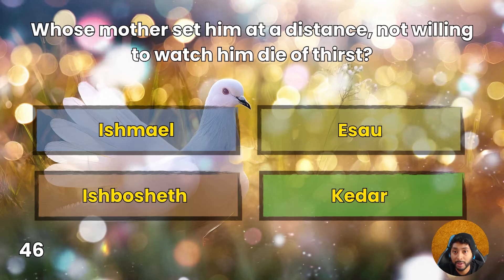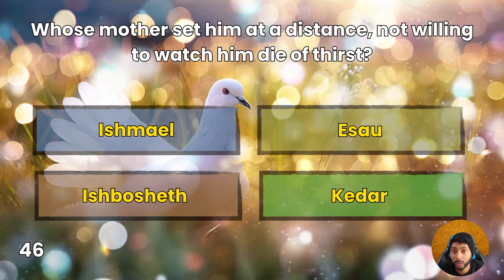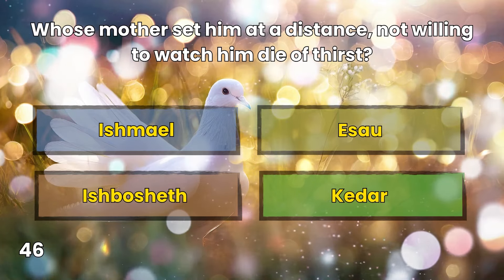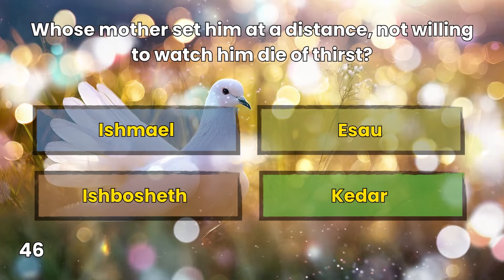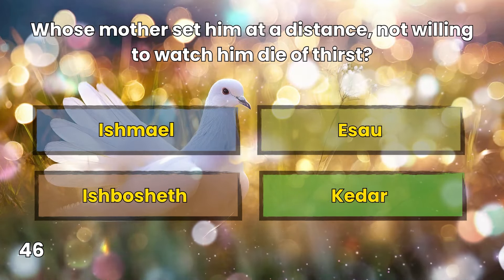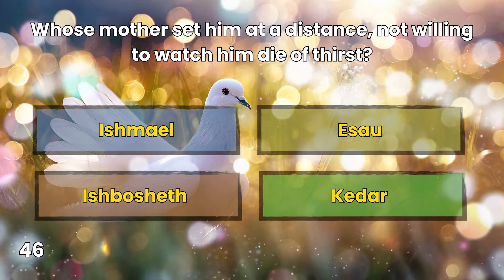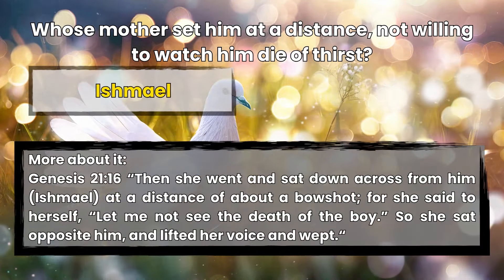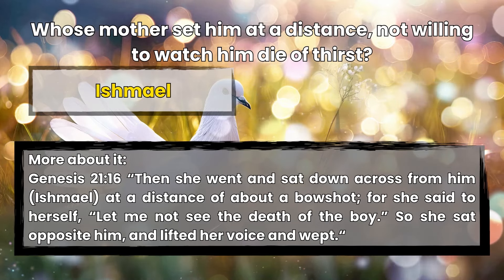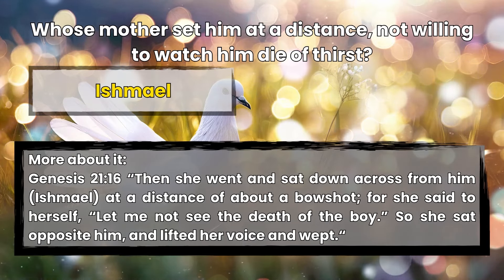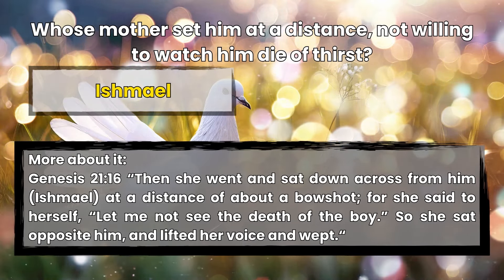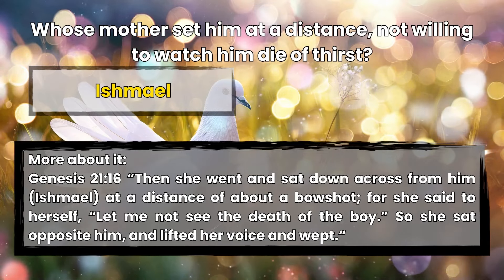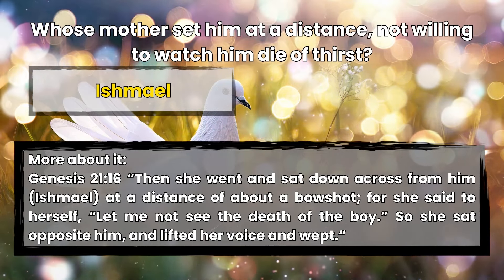Question 46: Whose mother set him at a distance, not willing to watch him die of thirst? Ishmael, Esau, Ishbosheth, or Kedar? Ishmael. Genesis 21 — For she said to herself, 'Let me not see the death of the boy.' So she sat opposite him, and lifted her voice, and wept.